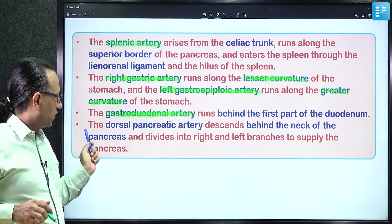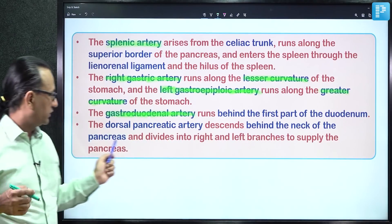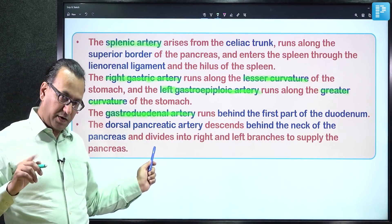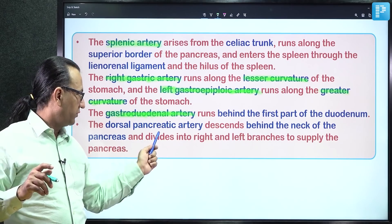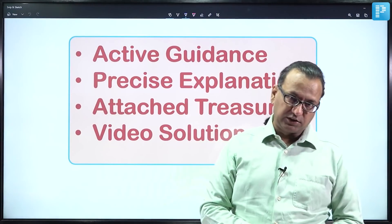Additionally, the dorsal pancreatic artery, which descends behind the neck of the pancreas, also supplies the pancreas. It is itself a branch of the splenic artery.